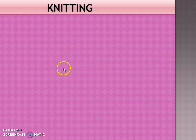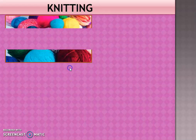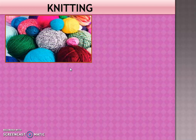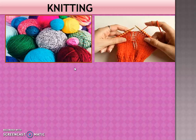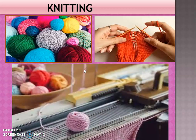A sweater is worn in cold weather. Have you ever wondered how a sweater is made? Sweaters are usually made by converting yarn to fabric through knitting. Knitting is done with needles created especially for this purpose. So yarn is converted into fabric through weaving and knitting.